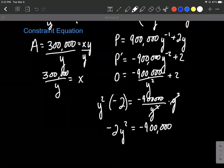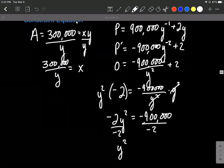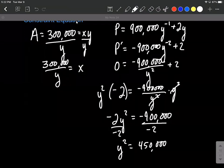We'll isolate the y squared by dividing both sides by negative 2. So y squared is equal to 450,000. And to get rid of the square, we're going to apply a square root to both sides.